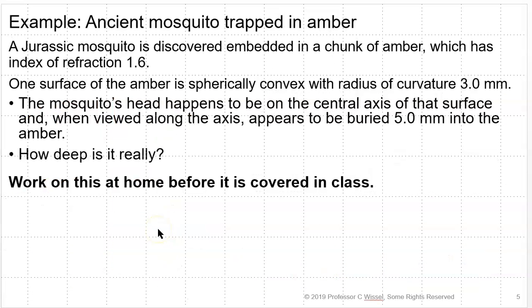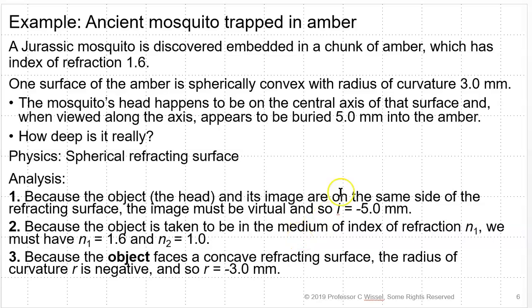Here's an example. A Jurassic mosquito is discovered in a chunk of amber, which has an index of refraction of 1.6. One surface of the amber is spherically convex with a radius of curvature of 3 millimeters. The mosquito's head appears to be on the central axis of that surface and, when viewed along the axis, appears to be buried 5 millimeters into the surface. How deep is it really? This is a spherical refracting surface problem. Because the object — the head — and its image are on the same side of the refracting surface, the image is virtual. That means I is negative, and we'll write down negative 5 millimeters.